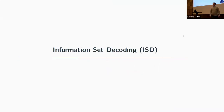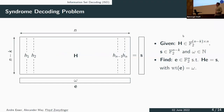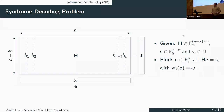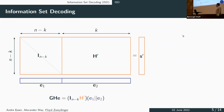Let us dive into information set decoding. Before talking about algorithms, we should know the problem we want to solve: the syndrome decoding problem. Given a parity check matrix H with n minus k rows and n columns, and a syndrome s, the goal is to find an error vector of length n such that H times e equals s. The problem becomes quite hard if we restrict the Hamming weight of our error vector to omega, which in the binary case is normally much smaller than n.